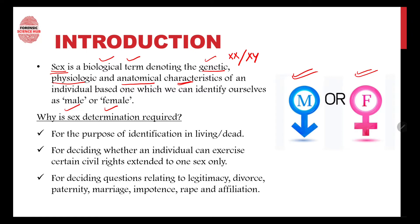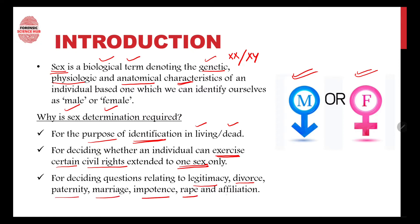Why is sex determination required? If we have found an unknown body, the first thing we need to ascertain is whether the person is male or female. Sex determination is required for identification in living as well as dead bodies, for deciding whether an individual can exercise certain civil rights extended to only one sex, and for questions related to legitimacy, divorce, paternity, marriage, impotence, rape, and affiliation.